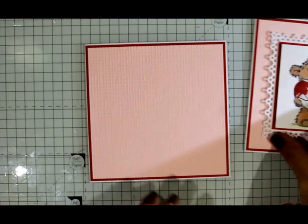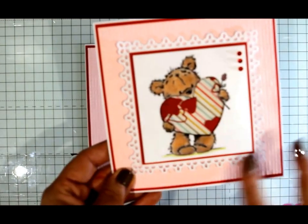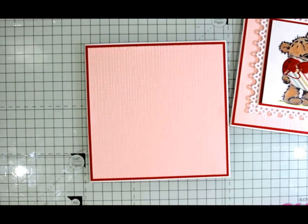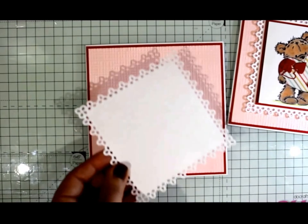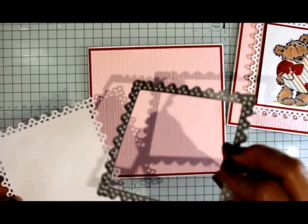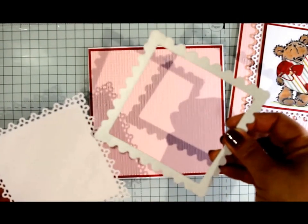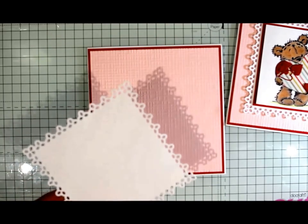The next step is to put on our decorative edge. I've already die cut my white square. It's a die here by, I think it's Tonic Studios. I'll double check for you and link it below.